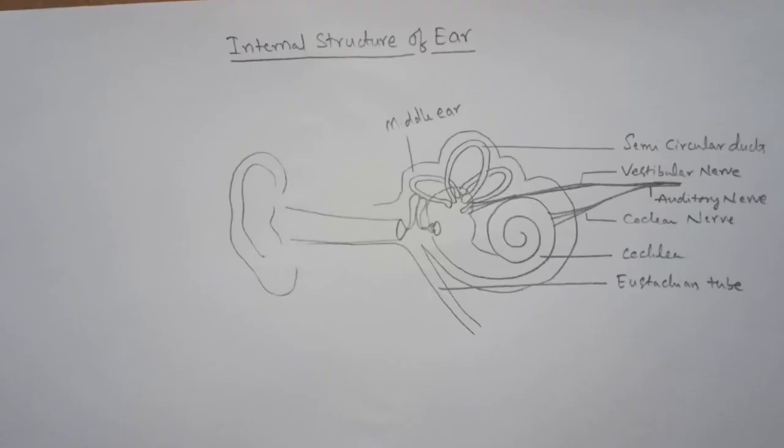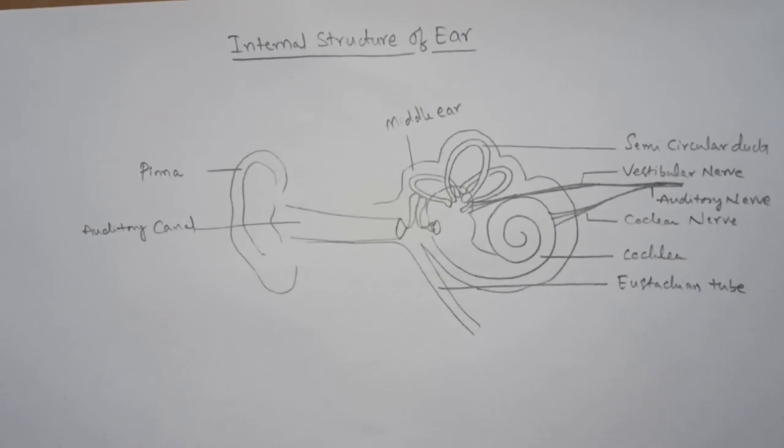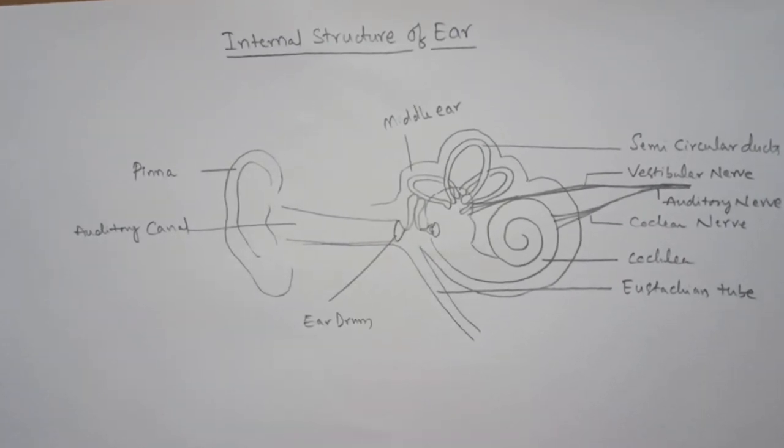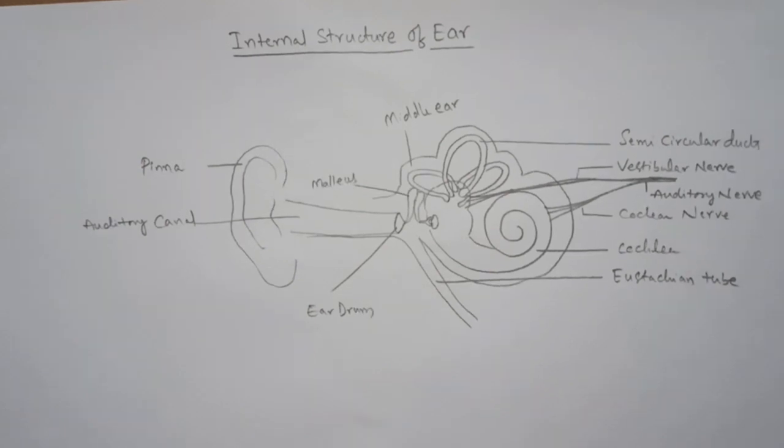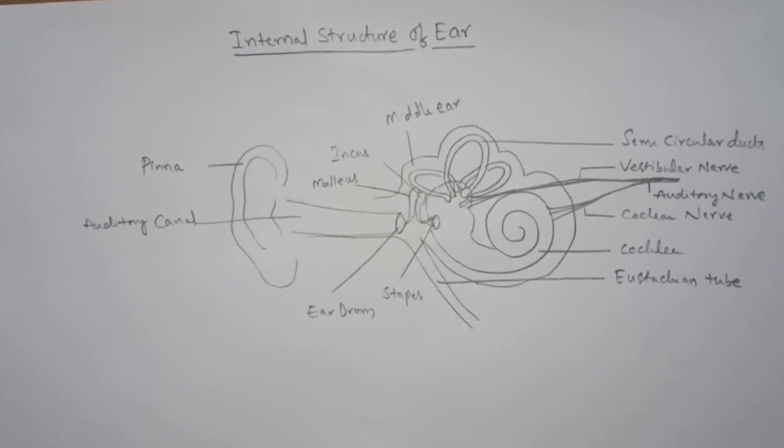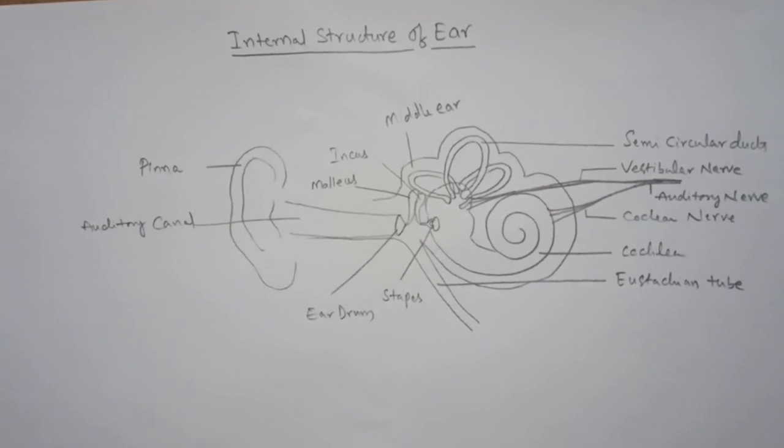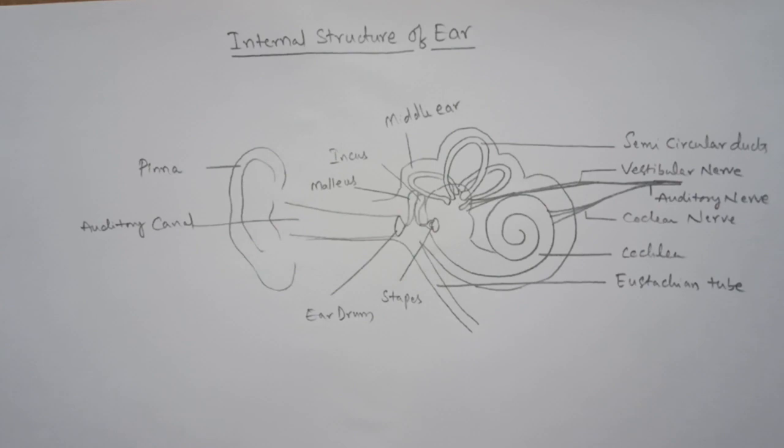Middle ear, ear pinna, auditory canal, ear drum, malleus, incus, stapes. With this, the diagram and labeling is completed. Hope you understand how to draw this diagram easily. Thank you.